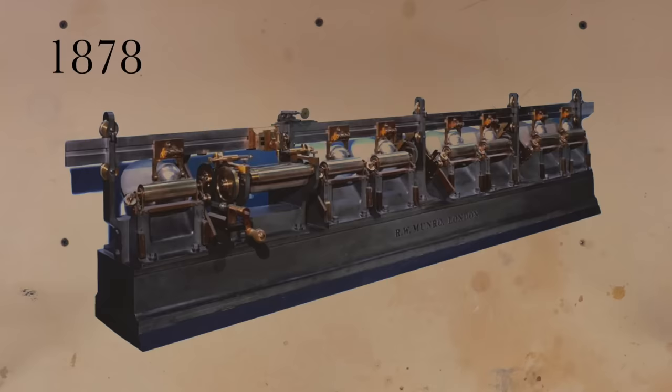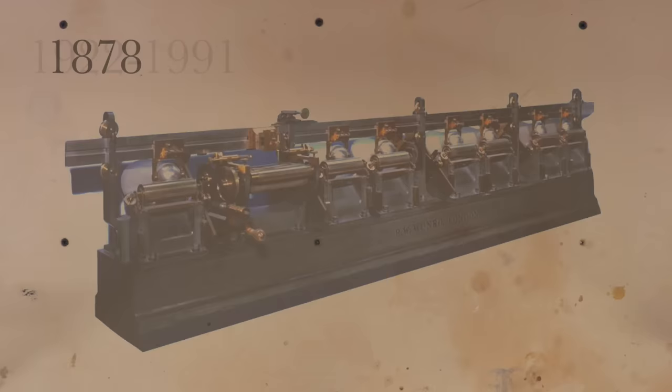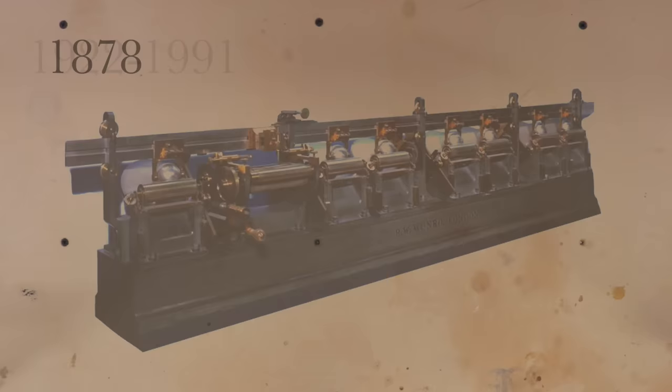In 1878, Lord Kelvin's harmonic analyzer used seven integrators to analyze changes in atmospheric temperature and pressure. Throughout the 1900s, the US Navy used integrators in mechanical ship computers to automatically calculate complex trajectories to hit moving targets in real time.